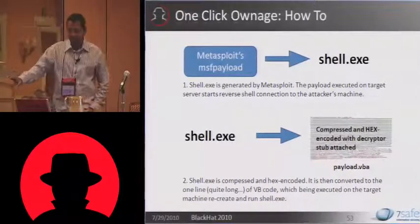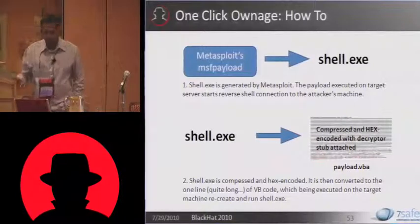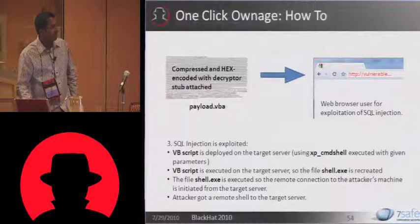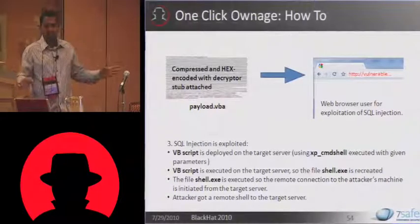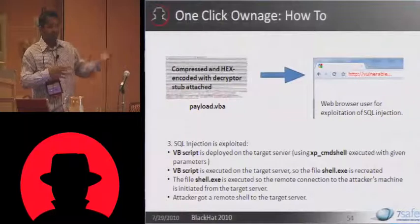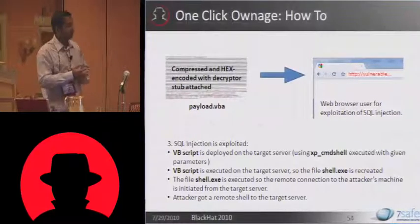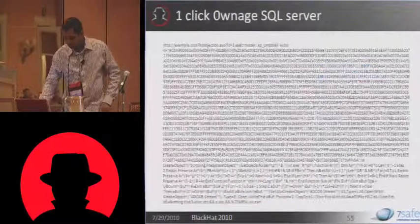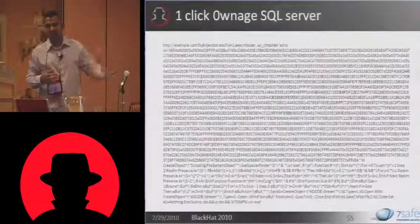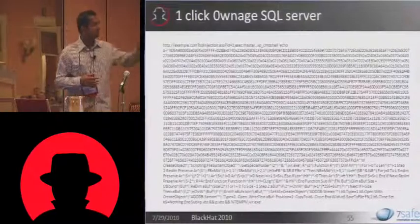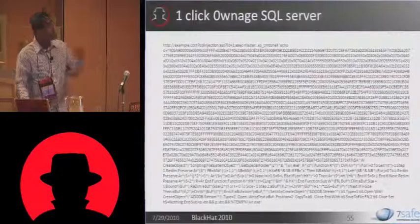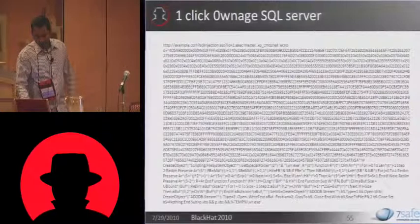Shell.exe is compressed and hex-encoded, converted to one long line of VB code, which gets executed on the machine and creates shell.exe. So you find a SQL injection, create this VBScript on your side, upload it onto the remote database server, execute it to create the MSF payload executable, and then run the executable. That one big long line of exploit — this was Faro's work for exploiting MS SQL injection, particularly for non-interactive ones. You issue one request and have whatever Metasploit payload you want coming back to you.